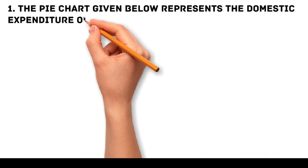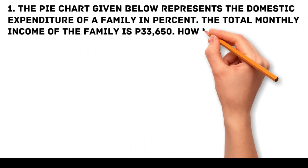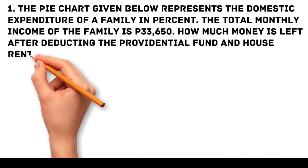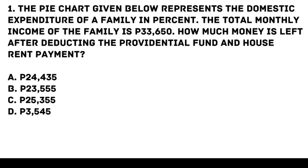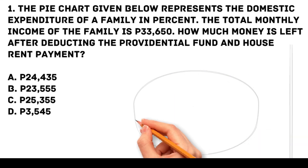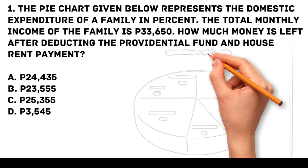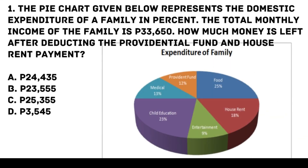Problem 1: The pie chart given below represents the domestic expenditure of a family in percent. The total monthly income of the family is 33,650 pesos. How much money is left after deducting the provident fund and house rent payment? Options: a. 24,435 pesos, b. 23,555 pesos, c. 25,355 pesos, d. 23,545 pesos.